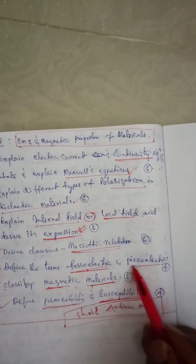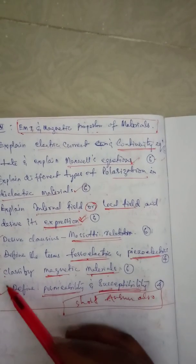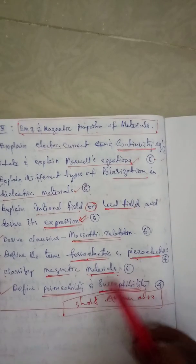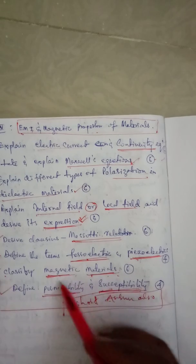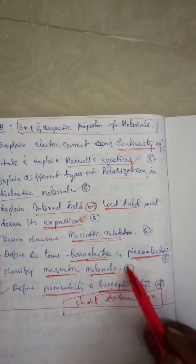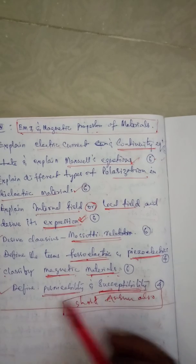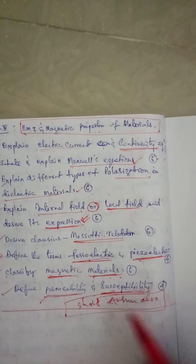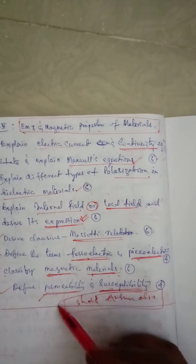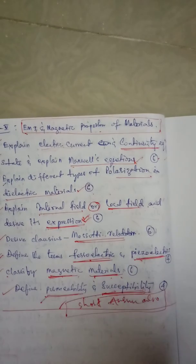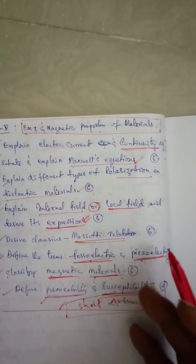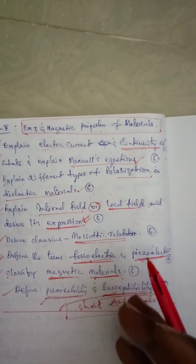The fifth question is 'Derive the Clausius-Mossotti equation' — very very important, asked many times. The sixth is 'Define the terms ferroelectrics and piezoelectrics' — very very important, asked many times. The seventh is 'Classify magnetic materials,' covering diamagnetic, paramagnetic, and ferromagnetic materials. The eighth is 'Define permeability and susceptibility' and explain their properties and characteristics.